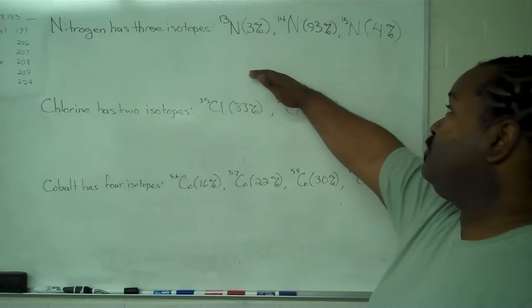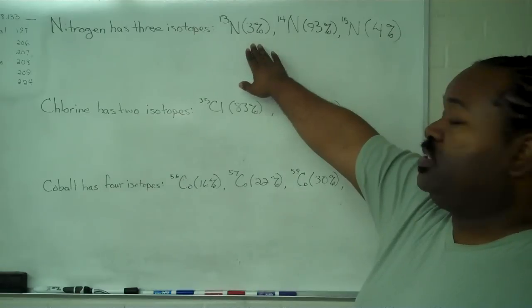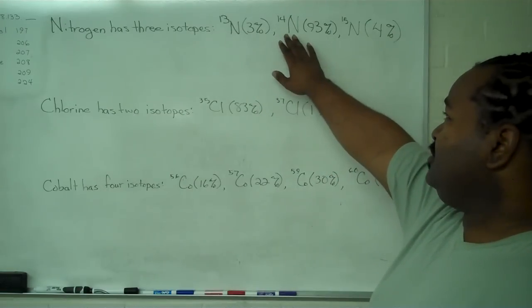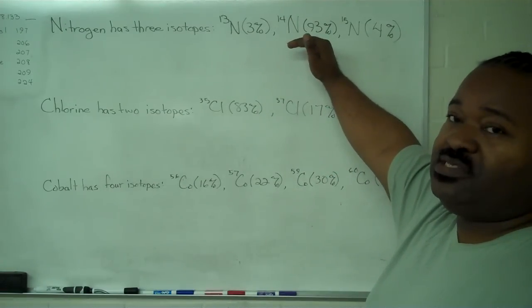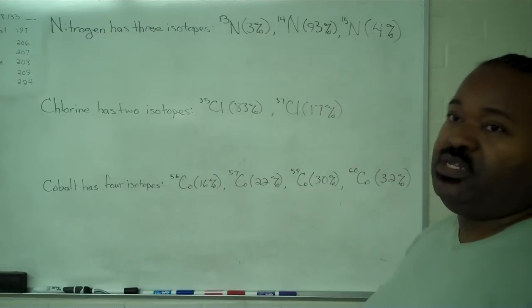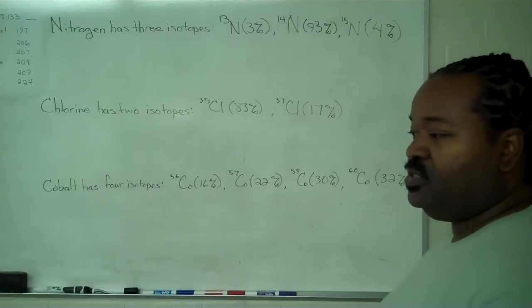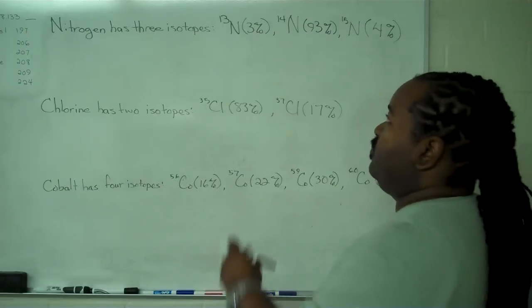we have nitrogen with three isotopes: nitrogen 13 with a relative abundance of 3%, nitrogen 14 with a relative abundance of 93%, and nitrogen 15 with a relative abundance of 4%. Now, in order to construct the weighted average,